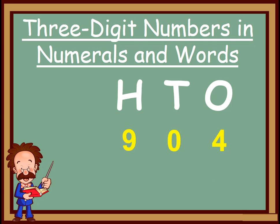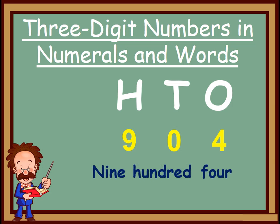Here comes another one: 9, 0, 4. This is also a 3 digit number. Can you read the number? Yes, 904. As I told you, we write as we read. So we read it as 904, and we will write like this: 904.